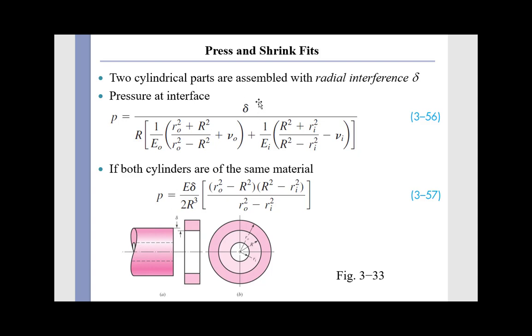Delta is the radial interference. Now, look, you can calculate this contact pressure either in terms of radius or diameter. You just have to be consistent and use either radii or diameter throughout.